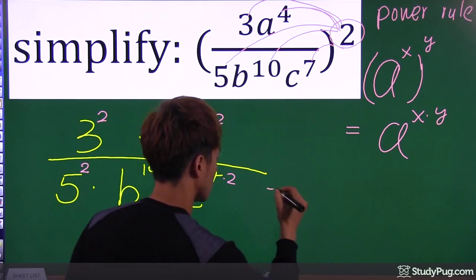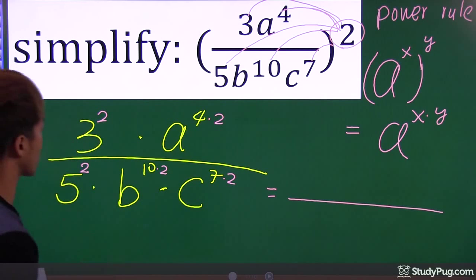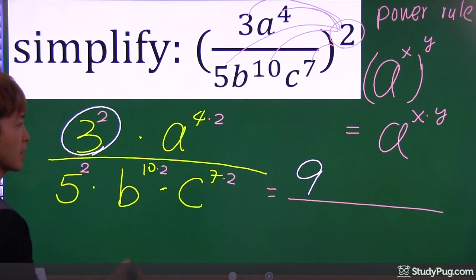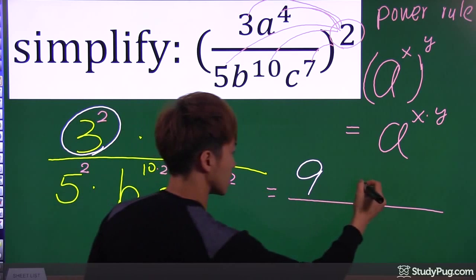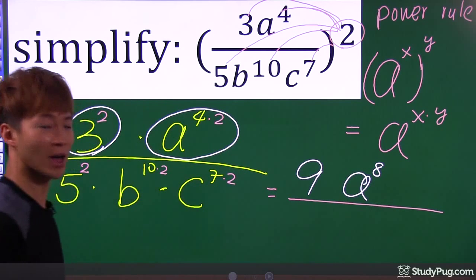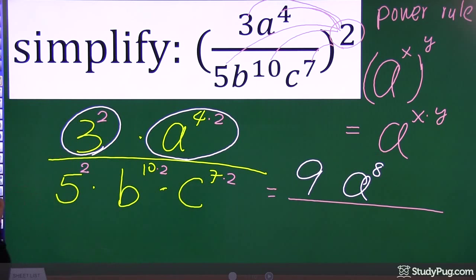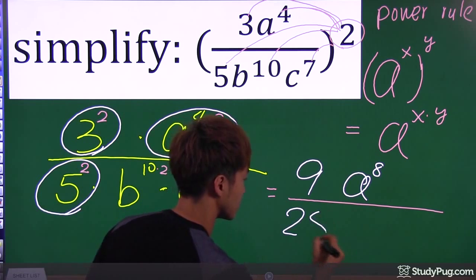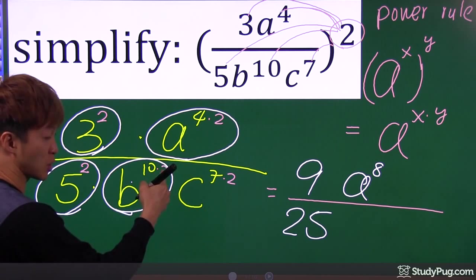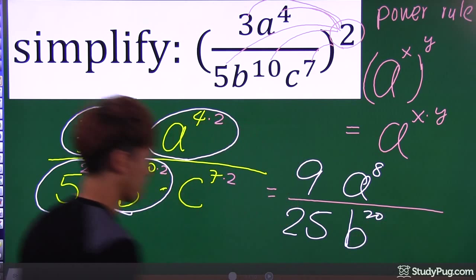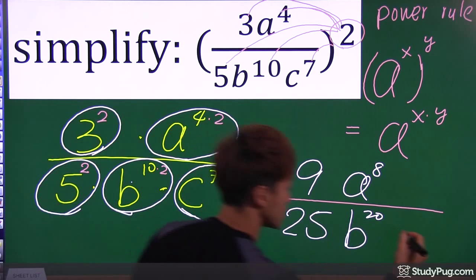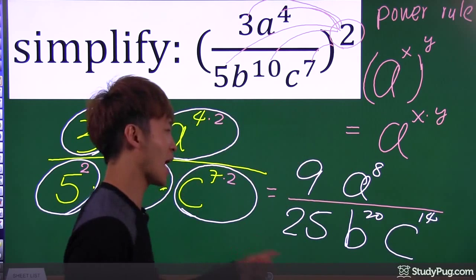Now we're ready to get the final answer. 3 squared is 9. a to the power of 4 times 2 is 8. The numerator is done. The denominator: 5 squared is 25. b to the power of 10 times 2 is b to the power of 20. c to the power of 7 times 2 is 14, so c to the power of 14. And that is the final answer.